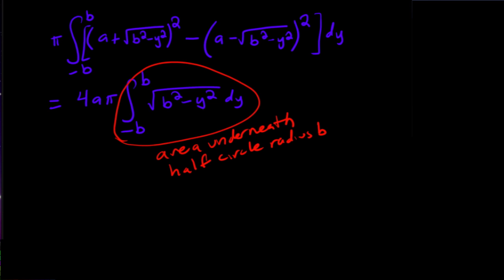So the volume, this is going to equal to 4a pi times one half pi b squared which is equal to 2 pi squared a b squared. And that's it.